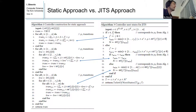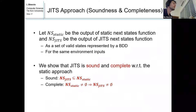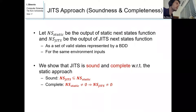We also prove soundness and completeness for JITS. Let NS_static be the output of the static next-state function and NS_JITS the output of the JITS next-state function — each a set of valid state assignments represented by a BDD, for the same environment inputs. JITS is sound: if there is a valid state for JITS, it is also valid for the static approach. JITS is complete: if the static approach returns a non-empty next state, JITS also returns a valid next state — it won't get stuck if the static approach doesn't.